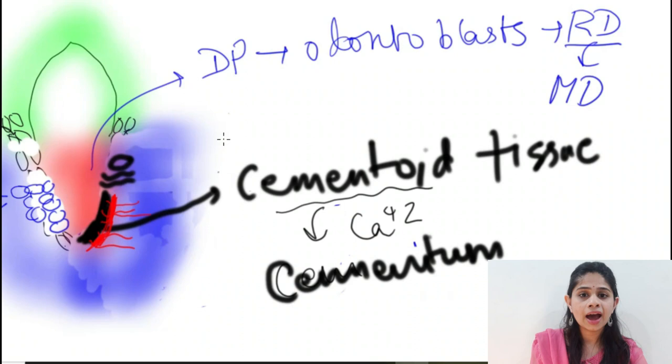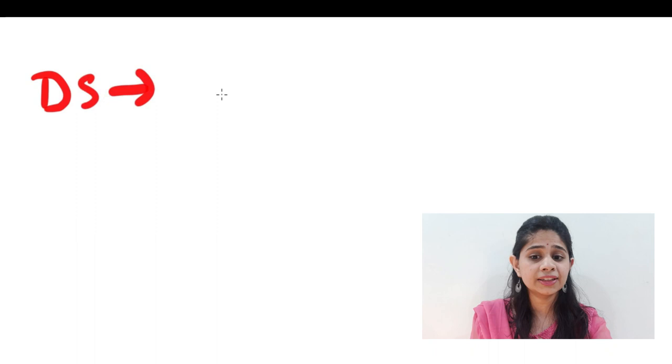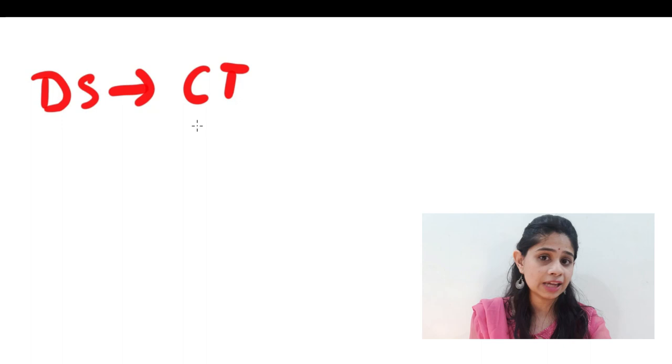The dental sac is a type of connective tissue which is next to Hertwig's epithelial root sheath, which is the epithelial component.